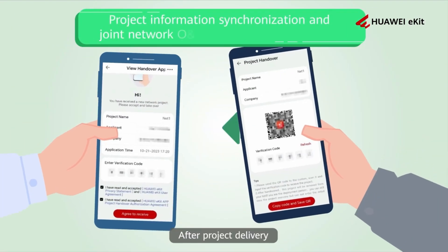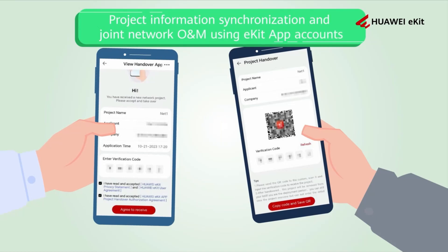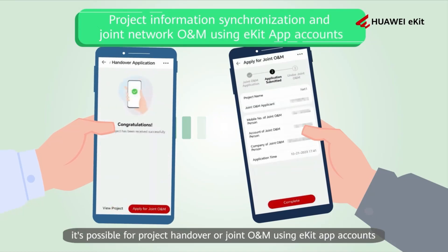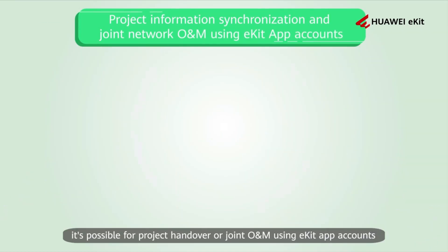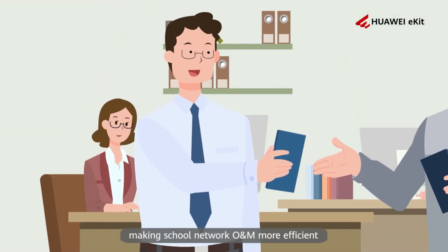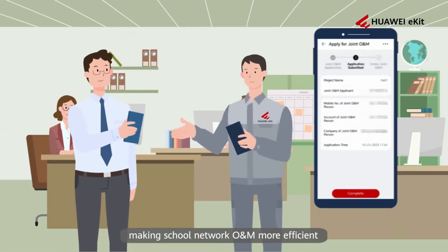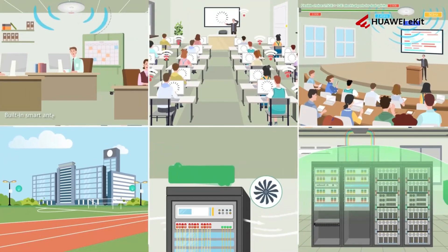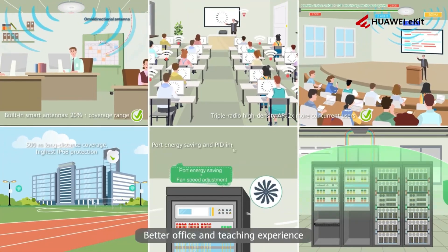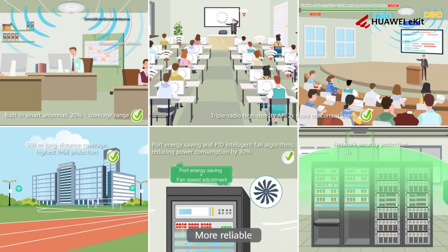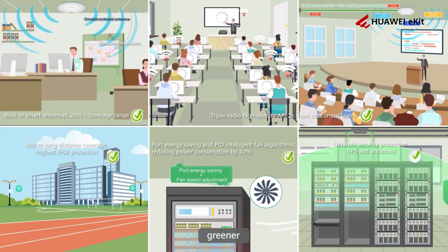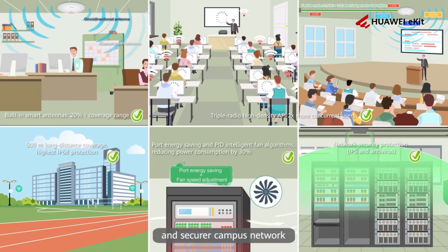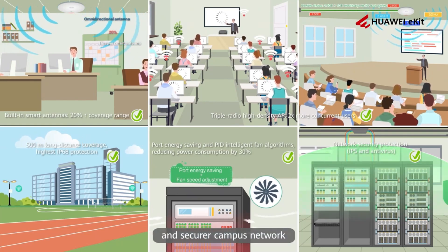After project delivery, project handover or joint O&M is possible using eGit App accounts, making school network O&M more efficient. The result is a better office and teaching experience, with a more reliable, greener, and secure campus network.